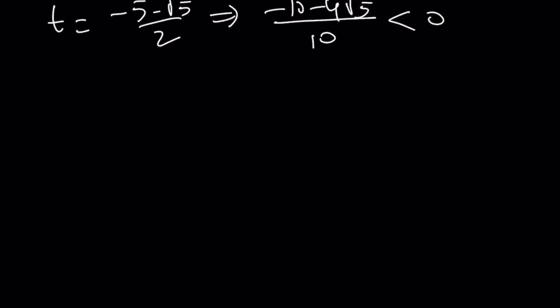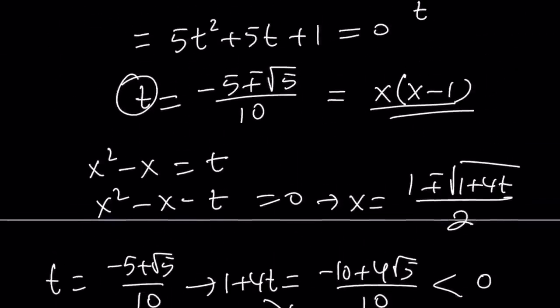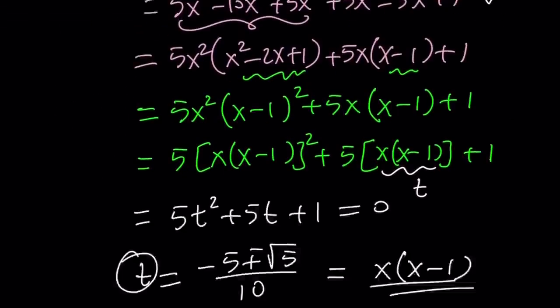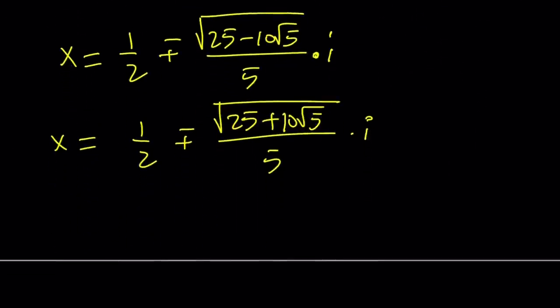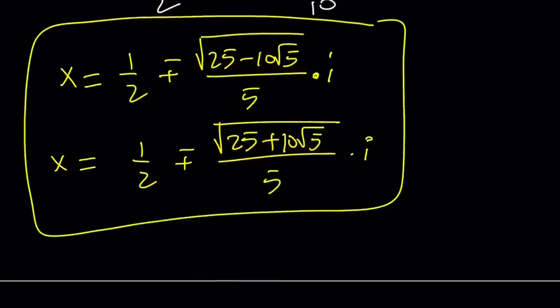What that means is that your solutions are going to be non-real complex solutions. Let's write those solutions now. We're going to be getting x equals one half plus minus the square root of 25 minus 10 root 5 over 5 times i. The other solution is going to be one half plus minus the square root of 25 plus 10 root 5 over 5 times i. So that gives us four solutions and that makes sense because that was a quartic.